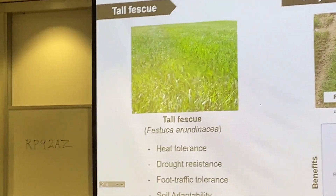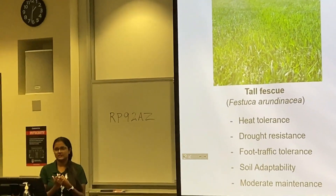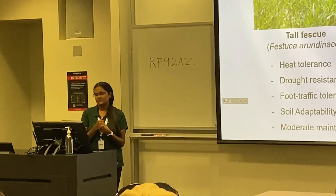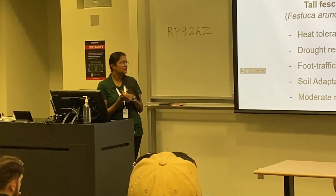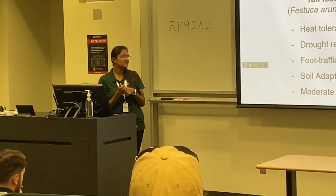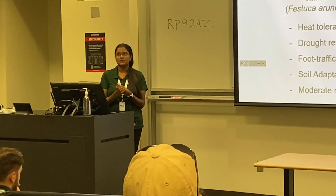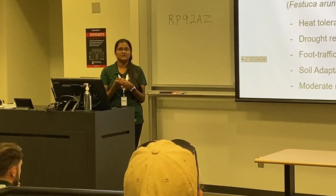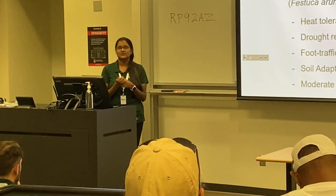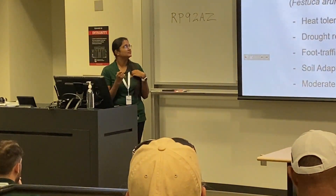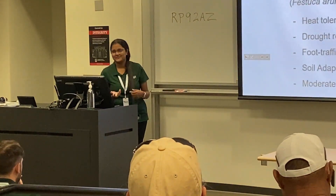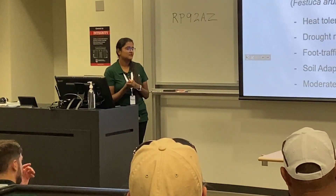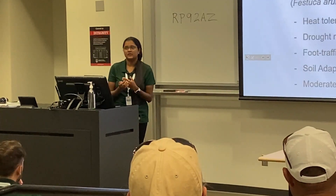Tall fescue is a very heat-tolerant grass, so it performs well in the transition zone. It has deeper root systems so it can withstand drought, has good foot traffic tolerance, and can adapt to different types of soil conditions — alkaline, acidic, and less fertile soils. It requires only moderate maintenance, making it a very ideal choice for homeowners for their lawns.